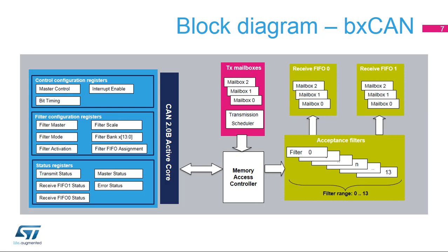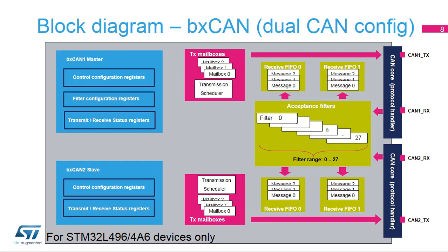This simplified block diagram of the BX CAN in dual CAN configuration shows the shared 28 acceptance filters between the two BX CAN modules. The user can assign each filter to either FIFO 0 or FIFO 1 and configure each filter for identifier mask or list mode. Note that this dual CAN configuration is only available for STM32L496 and A6 devices.